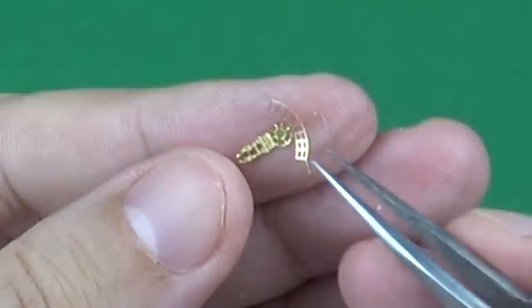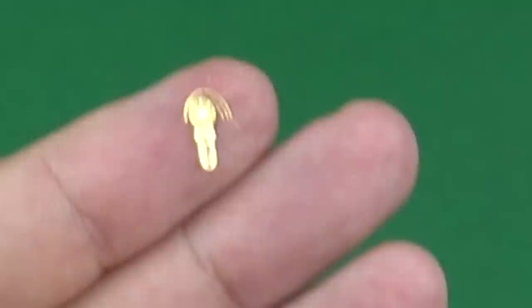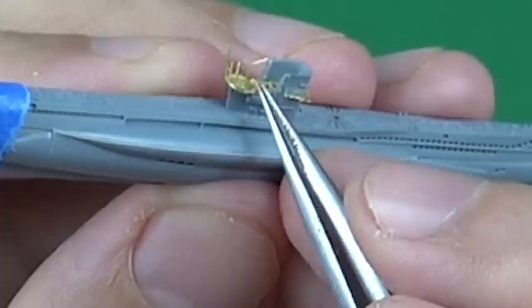As usual, I'm shaping the PE parts using basic tools. I prefer Tamiya X-22 as a glue to fixing PE parts on critical places like this. After it dried, I'm fixing the remaining with CA glue.